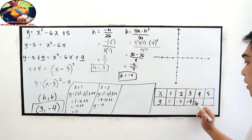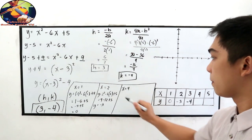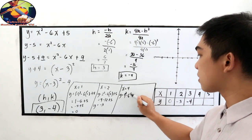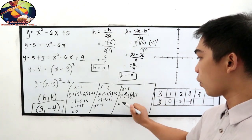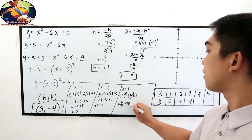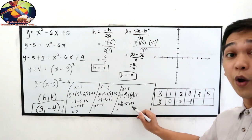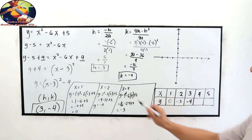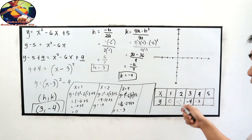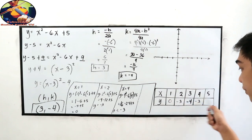For x equal to 3, y is negative 4. For x equal to 4: y equals 4 squared minus 6 times 4 plus 5, which is 16 minus 24 plus 5, giving 21 minus 24, equal to negative 3. Notice the pattern: x=2 gives y=negative 3, and x=4 also gives y=negative 3. Therefore we can conclude that if x equals 5, y equals 0.